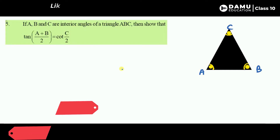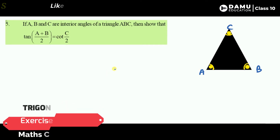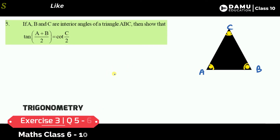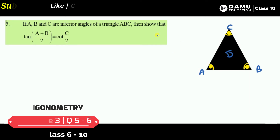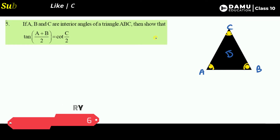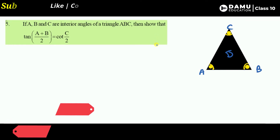Hello friends, welcome to Damu Education. If you haven't subscribed yet, please subscribe and click the bell icon. In this session we are going to discuss our fifth question: if A, B, C are the interior angles of triangle ABC, show that tan((A+B)/2) will be equal to cot(C/2).